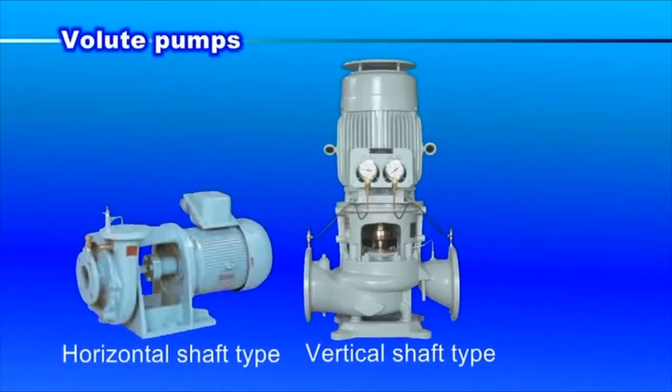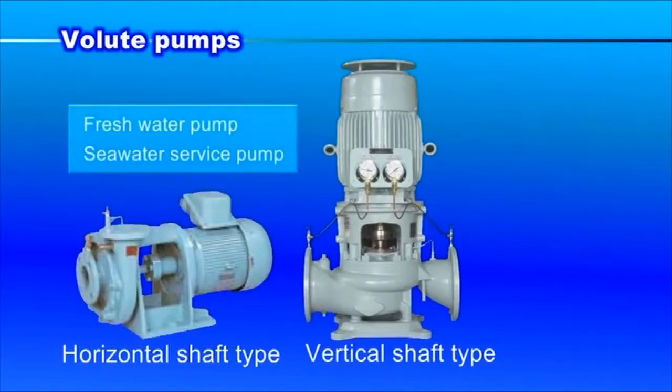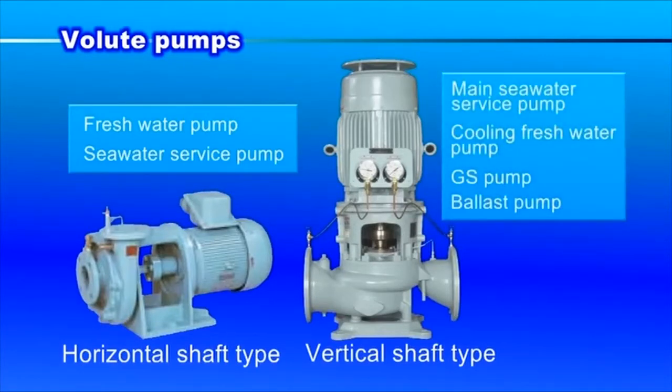Horizontal volute pumps are relatively small. They are mainly used as freshwater and seawater service pumps. Relatively larger vertical volute pumps are used as main seawater pumps, cooling freshwater pumps, general service pumps, and ballast pumps.